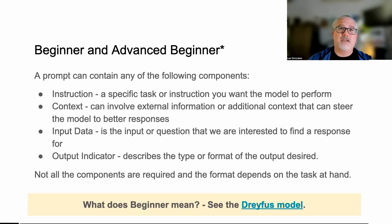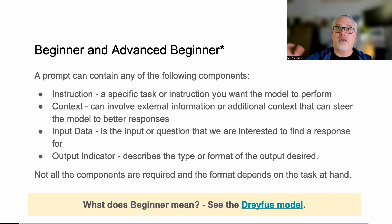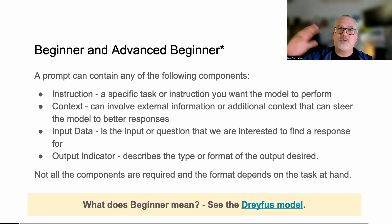What does it look like to be a beginner and advanced beginner with prompting? At the beginner level, a prompt can have multiple different components: an instruction, some set of context, some data you're providing as input, and then some kind of output indicator which tells the model what kind of output you want - whether that looks like JSON fragments or some sort of structured output that follows a pattern. This is kind of where most people start as they begin to work with ChatGPT or other large language models.